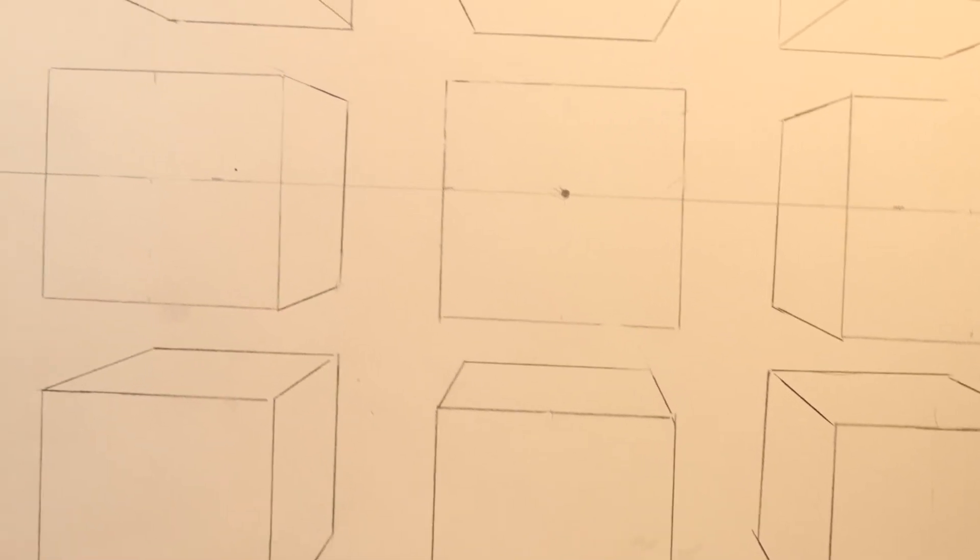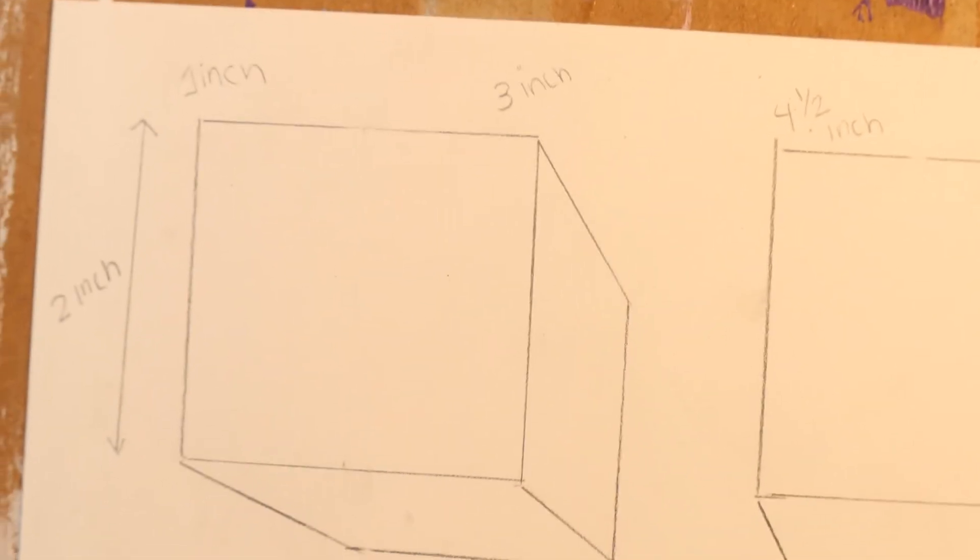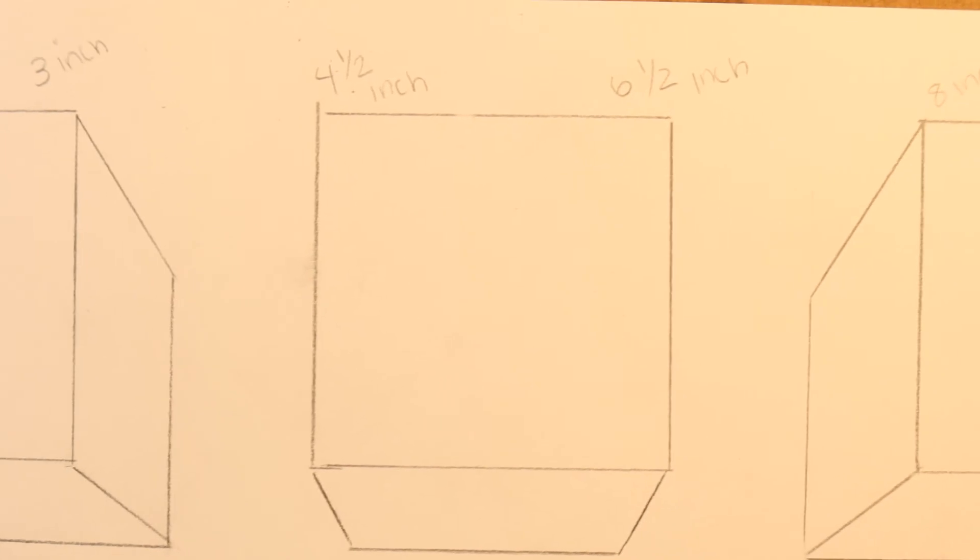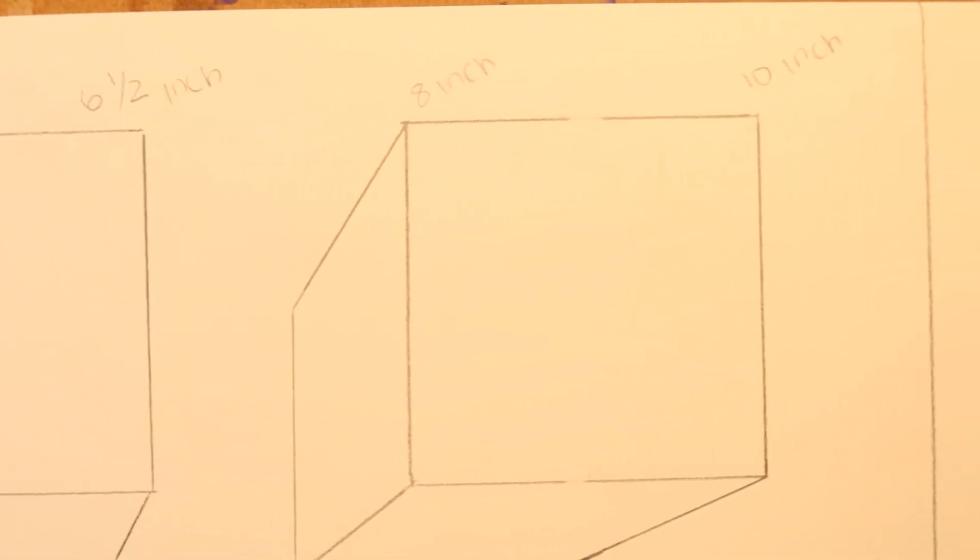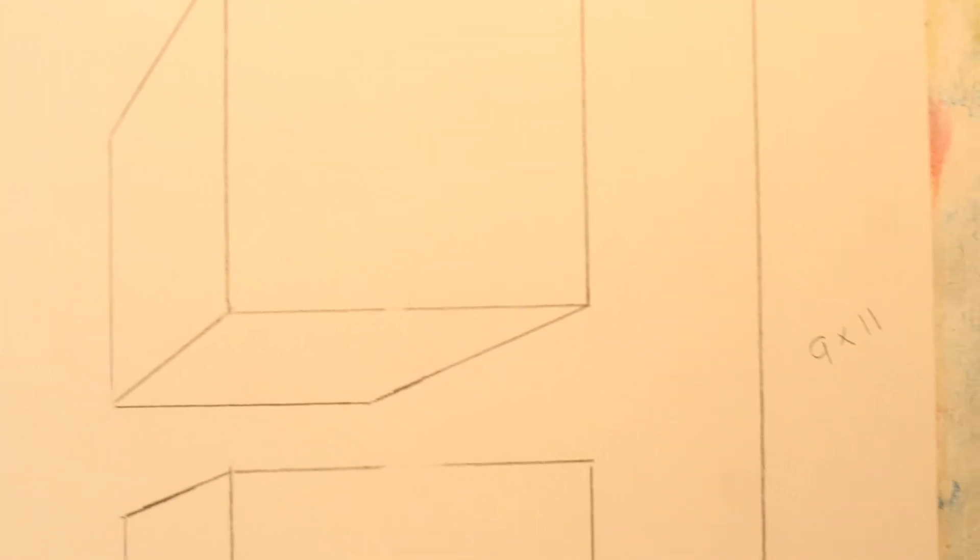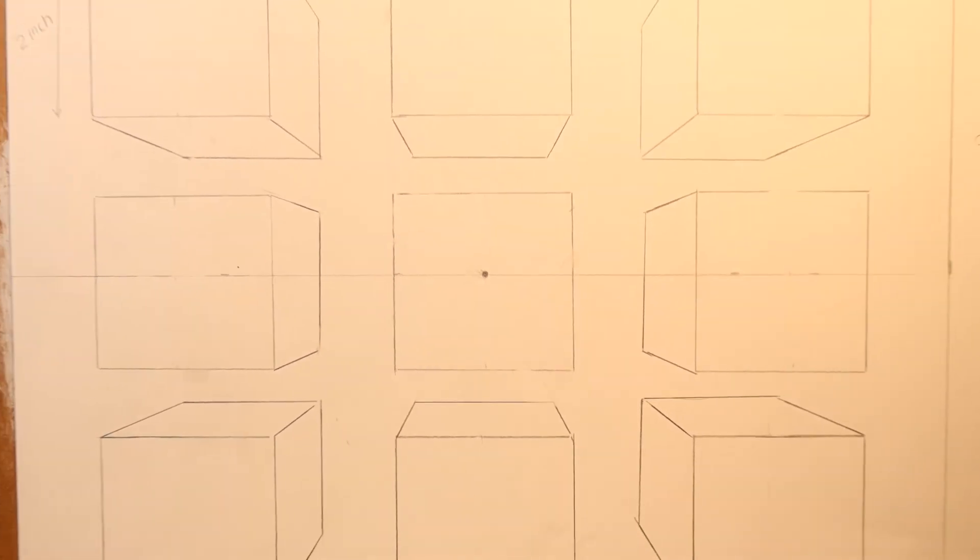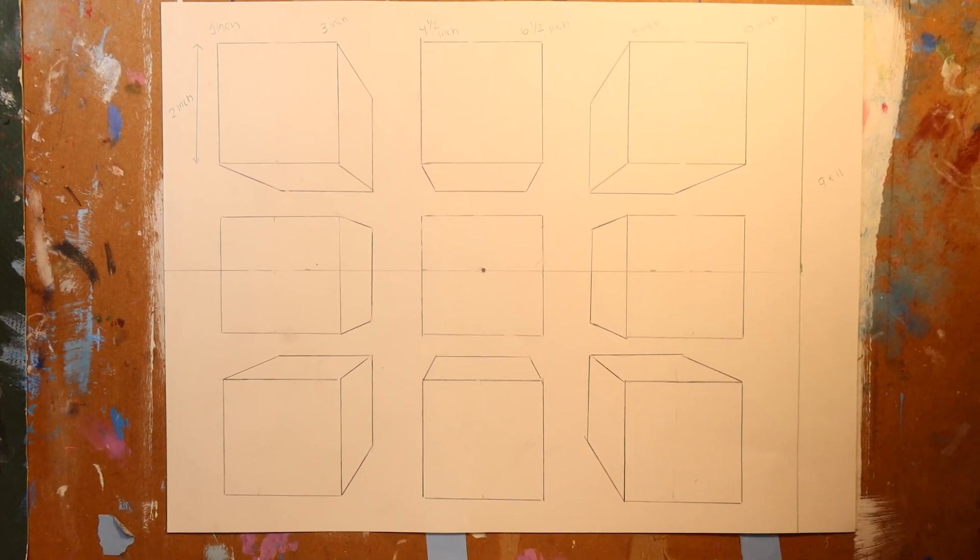So here is the finished result and I know one point perspective can be a little bit confusing but remember that your orthogonal lines always have to come back to the vanishing point and make sure you're using your ruler and measuring the edge of your ruler with the end of your paper so that way you know you're making straight vertical or horizontal lines and yeah just keep practicing.